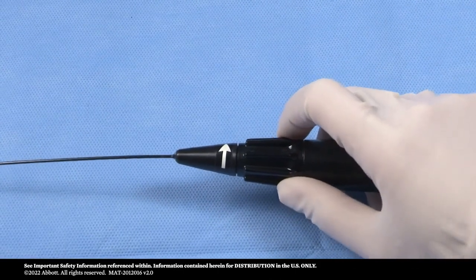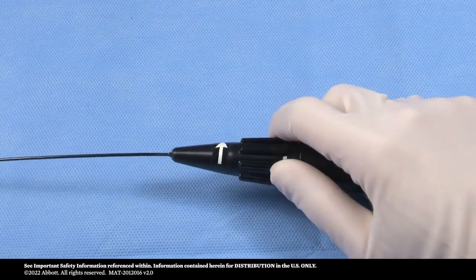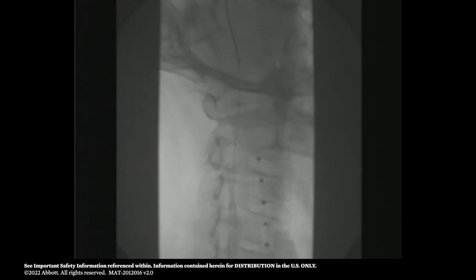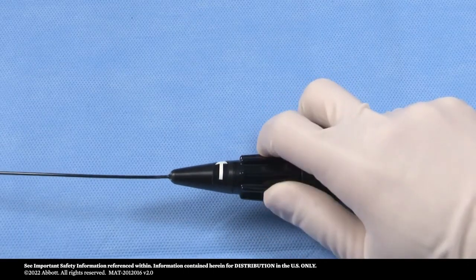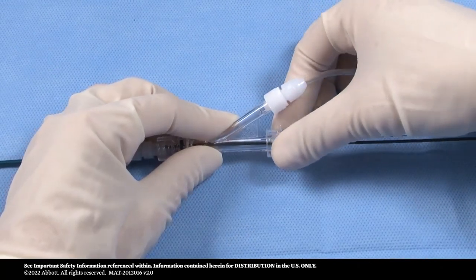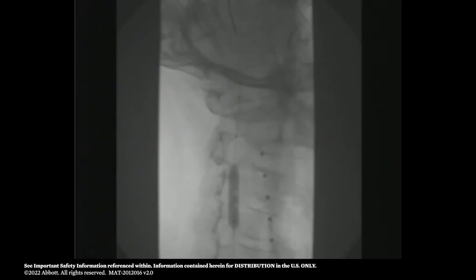Under fluoroscopic guidance, turn the deployment actuator in the direction indicated by the arrow to deploy the exact carotid stent. As deployment commences, verify the position of the exact carotid stent one more time. Continue to rotate the deployment actuator until the stent is fully deployed. Open the TUI borst. Remove the delivery catheter and post-dilate the stent if required.